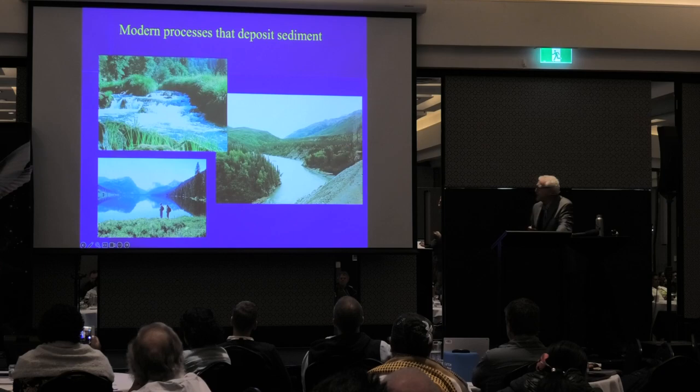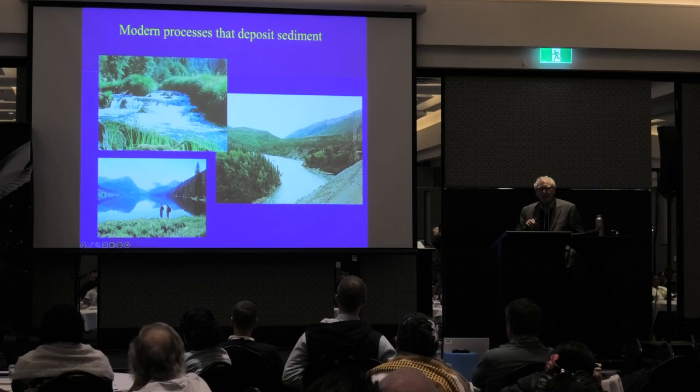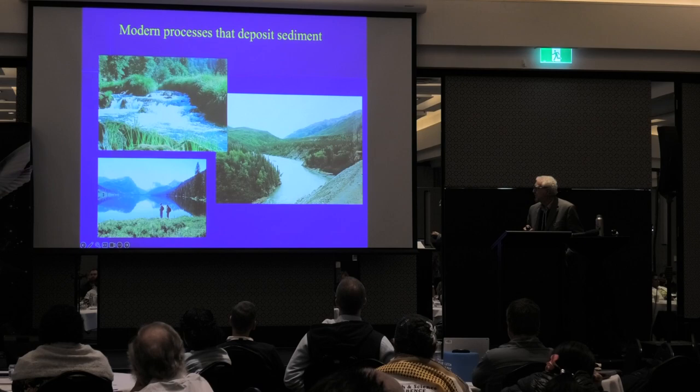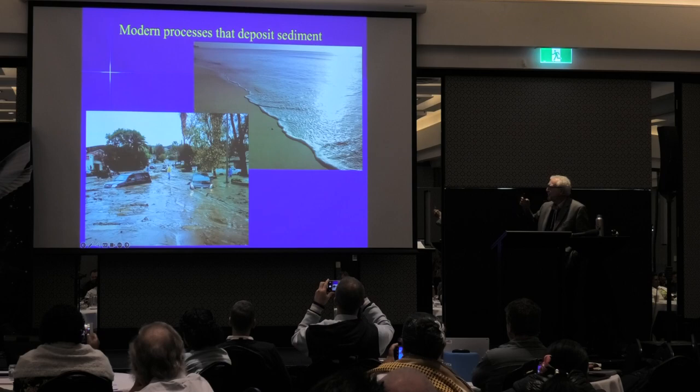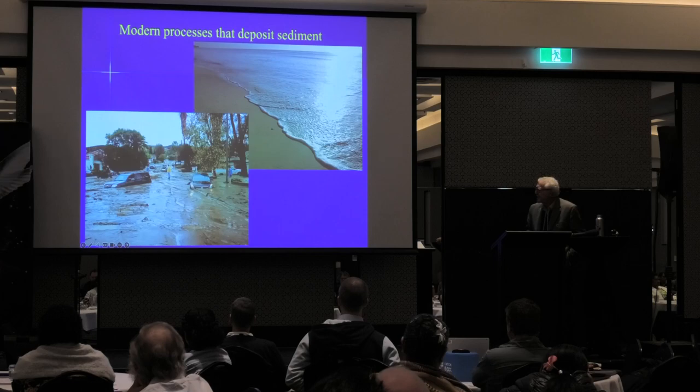When we talk about modern processes producing geology, what are we talking about? Just what we see here — some streams, rivers. In a lake, sediment is depositing down underneath the water. These are all modern processes. And uniformitarianism holds that those have to be the processes that do everything. Here are some more modern processes: on the upper right, under the ocean, there are layers being deposited by ocean currents and other things. We don't see those, but they're happening there under the water.